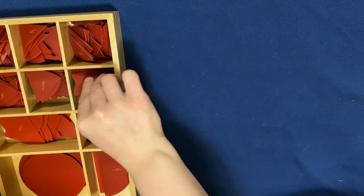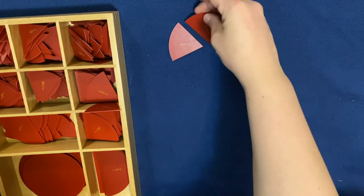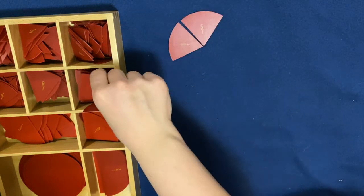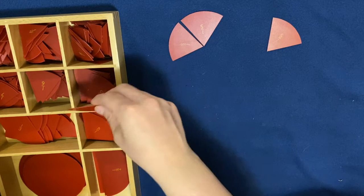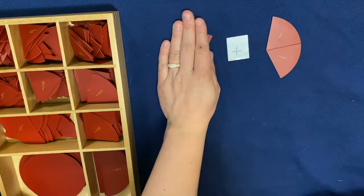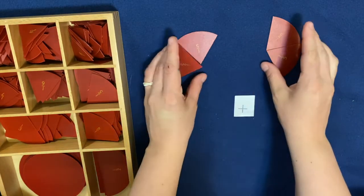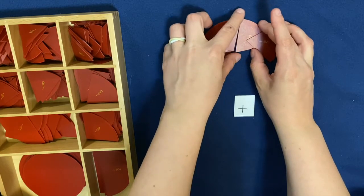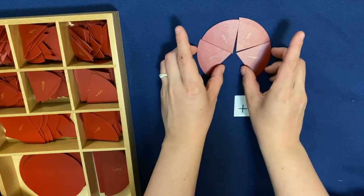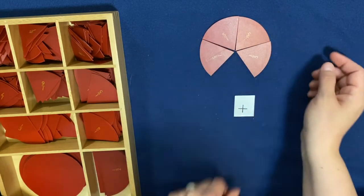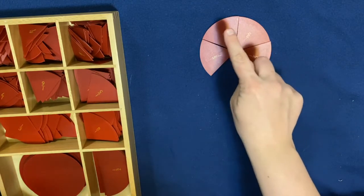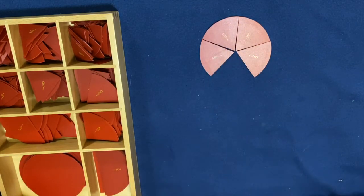If I wanted to add two-fifths plus two-fifths, if I wanted to add those together, well, we know that when we add things, we push them together. So two-fifths and two-fifths when put together gives you how many fifths all together? One, two, three, four. That equals four-fifths.